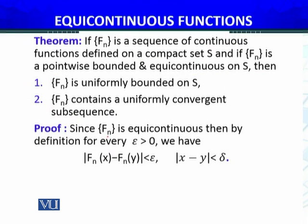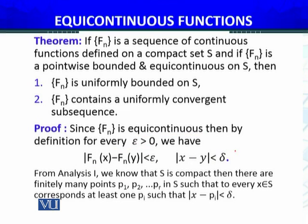Since fn is equi-continuous, by definition, for every epsilon greater than zero, |fn(x) − fn(y)| < epsilon for all n, whenever |x − y| < delta. This is the definition of equi-continuity.